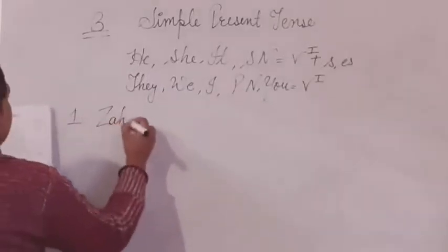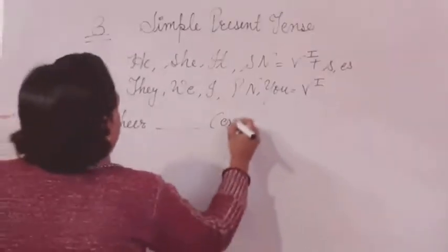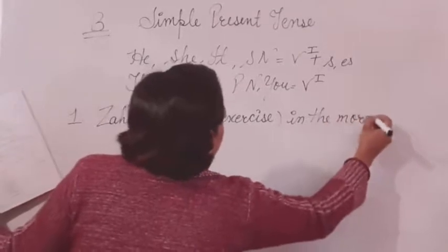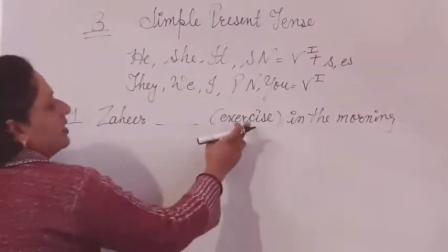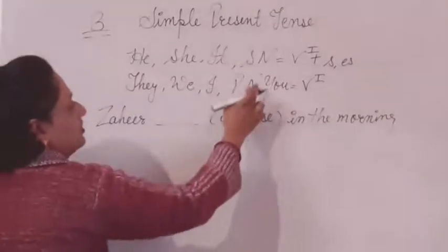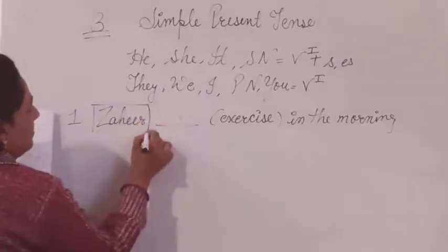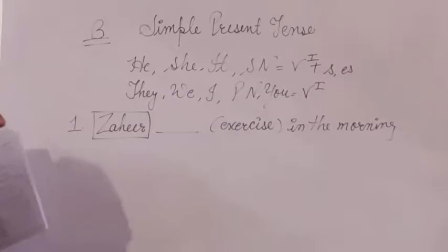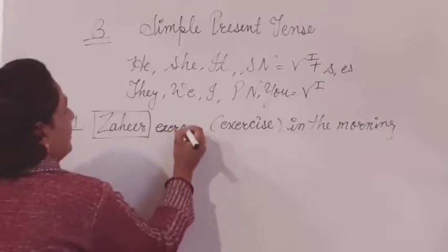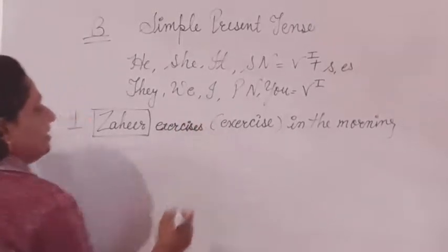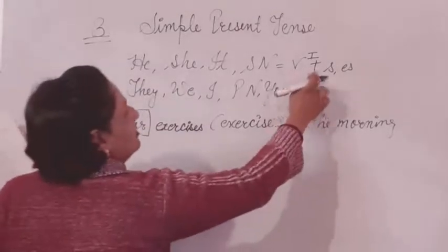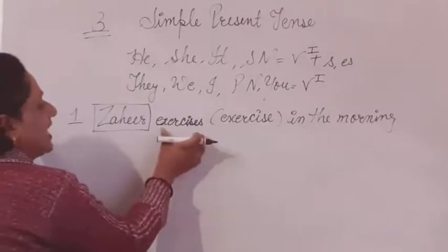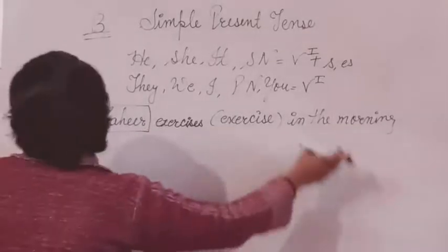First sentence: Jahir blank exercise in the morning. The subject is Jahir — the name of one person — so the subject is singular. We put the main verb exercise and add S with E, making it exercises. Since E is already given, we add only S. The sentence becomes: Jahir exercises in the morning.